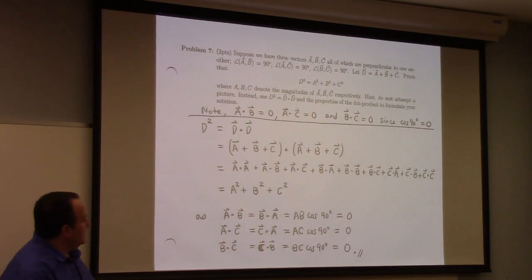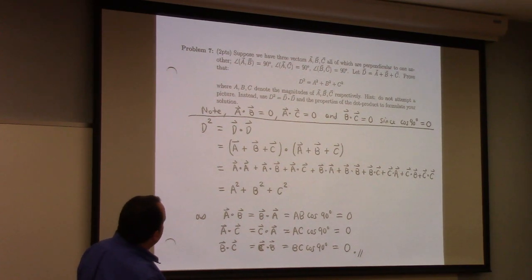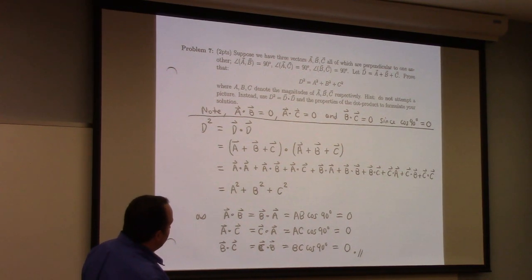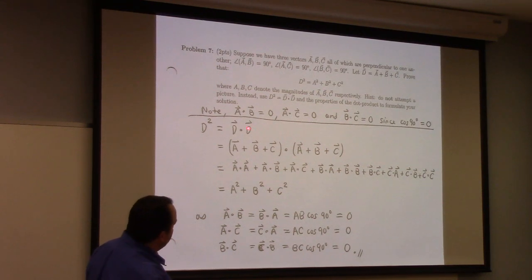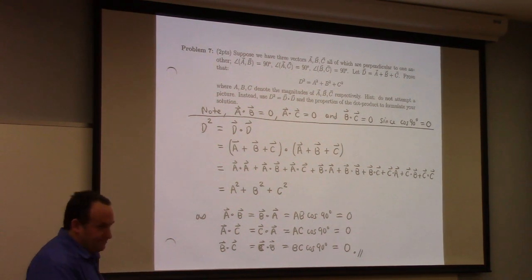Problem seven, despite looking kind of scary, was actually probably the easiest problem in this homework, because it's just algebra. You take the dot product of d with d — that's a distance squared — and you get that.